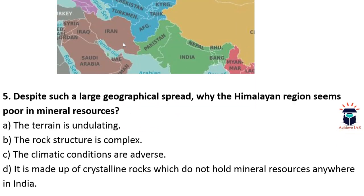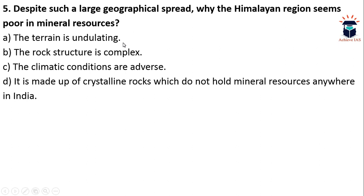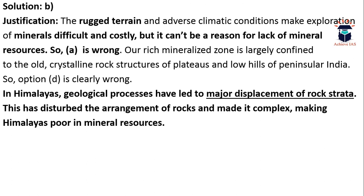Next question: despite such a large geographical spread, why does the Himalayan region seem poor in mineral resources? A — the terrain is undulating; B — the rock structure is complex; C — the climate conditions are adverse; D — it is made up of crystalline rocks which do not hold mineral resources. The most correct answer is B — the rock structure is complex. Rugged terrain and adverse climatic conditions make exploration difficult and costly, but they cannot be the reason for lack of mineral resources, so A and C are wrong.